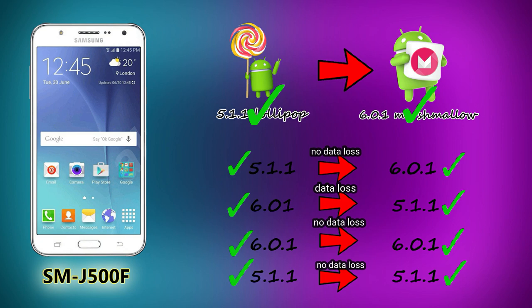In this Samsung J5 model, it has 1.5GB RAM. With 6.0.1 flash, there is a hanging problem — there are lags. That is why you may want to use the older version if you have any such problem.